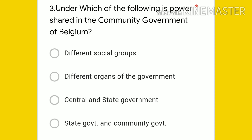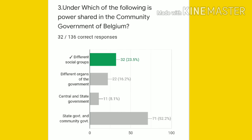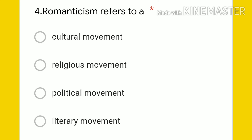Third question: under which of the following is power shared in the community government of Belgium? Options: different social groups, different organs of government, central and state government, or state government and community government. You should focus on why the community government was made. The answer is power was shared among different social groups. However, only 32 students gave the right answer; 71 students chose state government and community government.